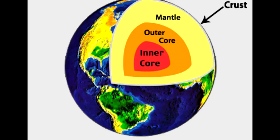The crust is the hard outer layer. The earth has a crust, mantle, outer core, and inner core. The most abundant element in the crust is oxygen. The most abundant metal is aluminum. The element of the atmosphere is nitrogen, the element of the universe is hydrogen, and the element of the crust is oxygen.